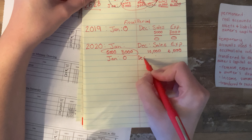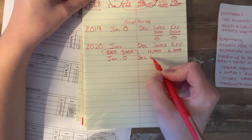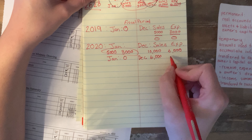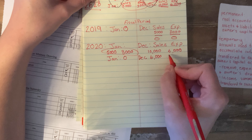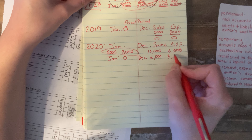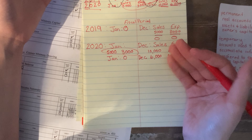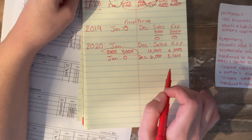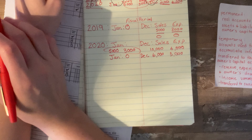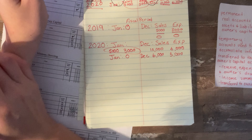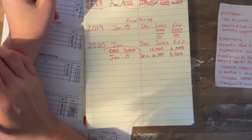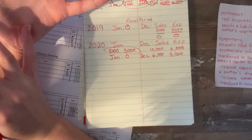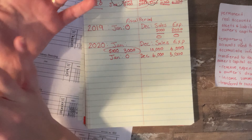So I'm going to start out on this front page. Income summary is a temporary account. Revenues and sales are a temporary account. Total expenses are a temporary account. A temporary account is an account used to accumulate information until it is transferred to the owner's capital account.